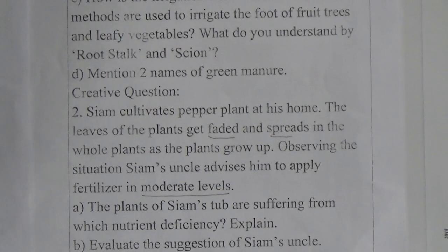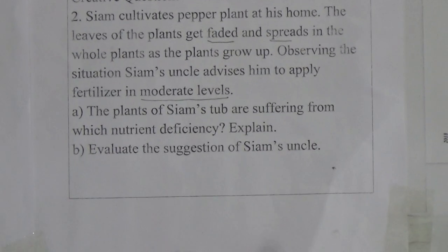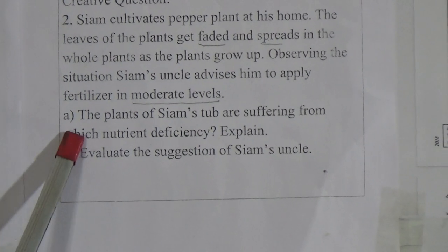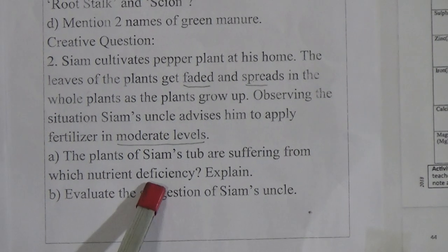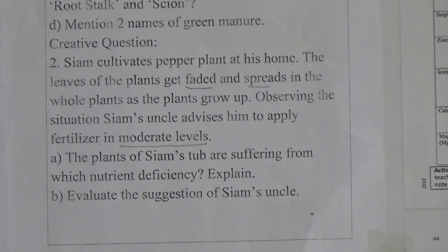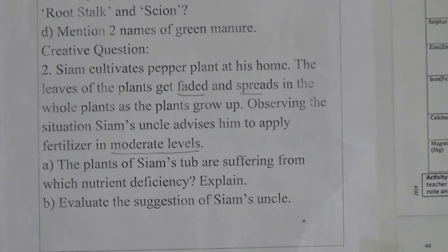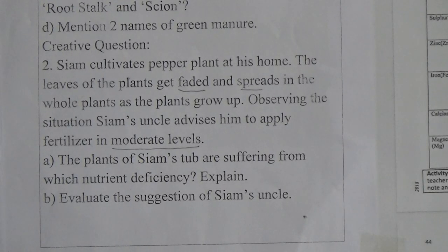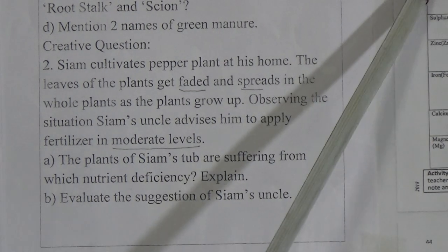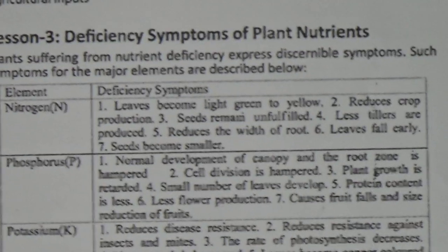Today I will help you to answer these two questions. I will discuss some topics from which you will get your answers and prepare your assignment. You know that there are 17 essential elements which plants get from the soil. If any of these nutrients are absent in the soil, the plant shows some symptoms. From your book lesson 3, you will see a chart where the deficiency symptoms of different nutrients are described.